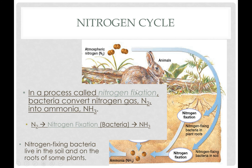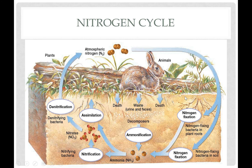You may remember carbon fixation from cellular respiration earlier in the year. N2 can't be used by organisms, so it has to be converted into a form that can be. Nitrogen fixation — the word fixation in biology means to take something from a non-usable form and make it usable. There are bacteria on earth that can convert N2 into ammonia, NH3. These nitrogen-fixing bacteria live in the soil, usually in the roots of different kinds of plants, and they are the ones that convert nitrogen into ammonia.